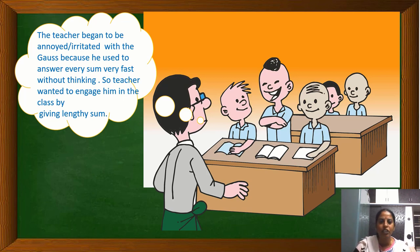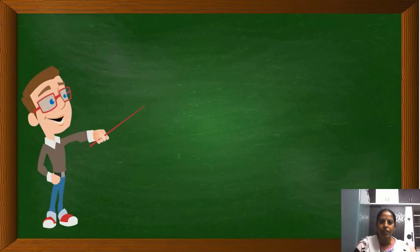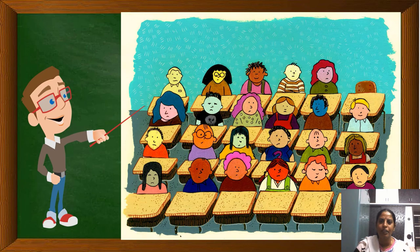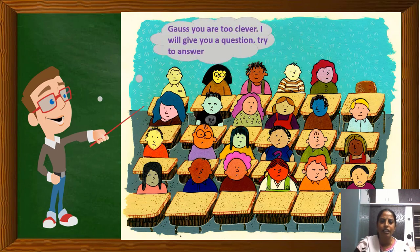The teacher began to be irritated with Gauss because he used to answer every sum very fast without thinking. So the teacher wanted to engage him in class by giving lengthy sums. One day in math class, as usual, Gauss completed answering all the questions and started asking doubts. So the teacher decided to give him a tough problem. He called Gauss: Gauss, you are too clever. I will give you a question. Try to answer.